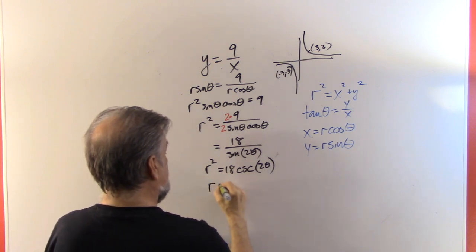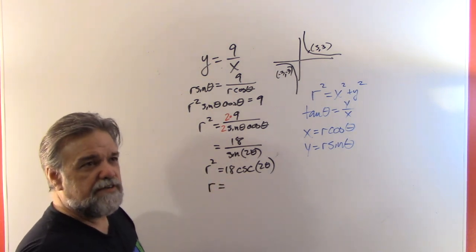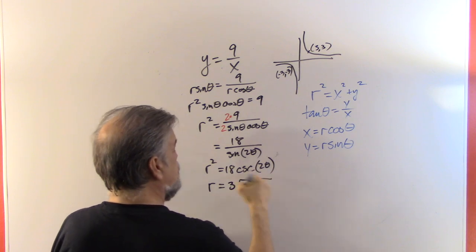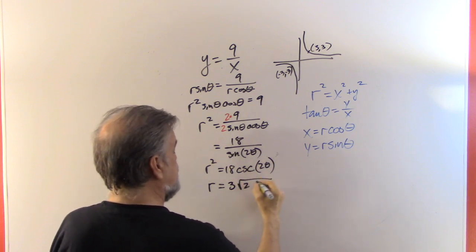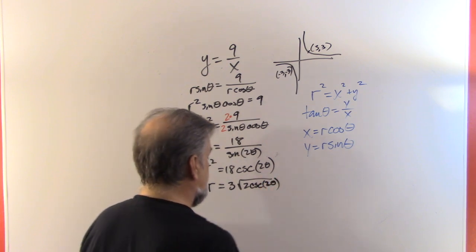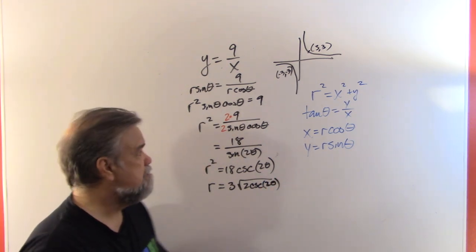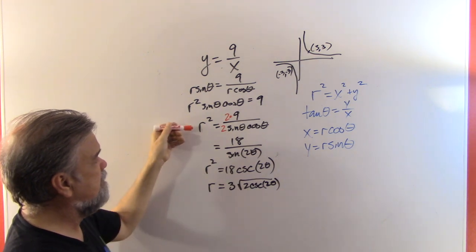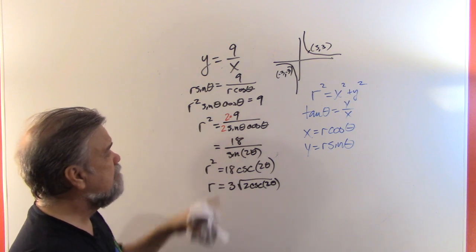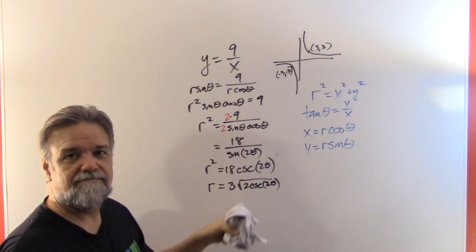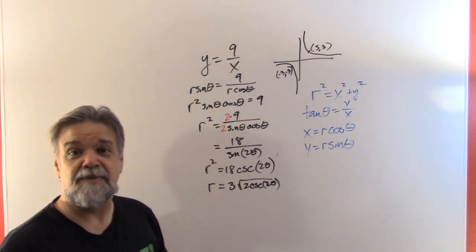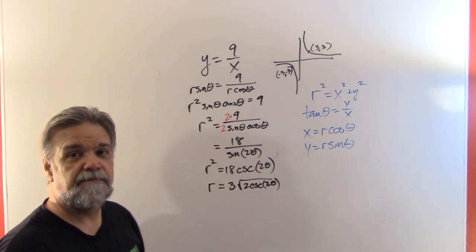which is 18 times the cosecant of two theta. And that's what r squared is. So what that means is r is square root of 18 is three root two. So three root two times a square root of cosecant of two theta. For me, the most important part is that you get to r squared equals 9 over sine theta cosine theta. But if you want to be as tidy as possible, you'll simplify it down to there.